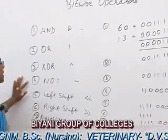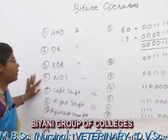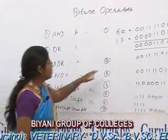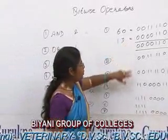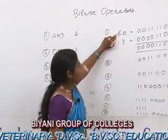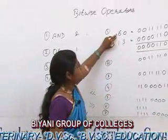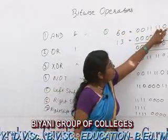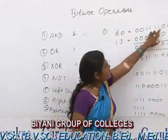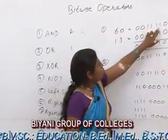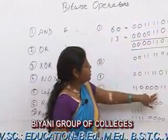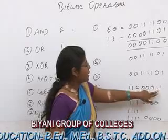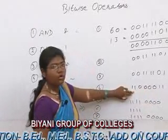The fourth operation is NOT. In NOT, we complement the value. If we complement the value of 60, then: 0 complement is 1, again 0 complement is 1, 1 complement is 0, 1 complement again is 0, and in the same way we get the whole output.